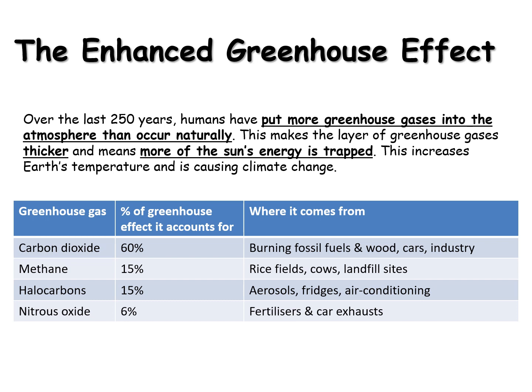Methane, 15 percent of the greenhouse effect, from rice fields, from cows, and landfill sites. Cows, as part of their digestion, actually burp methane. And so it's through cow burps that methane is added to the atmosphere.